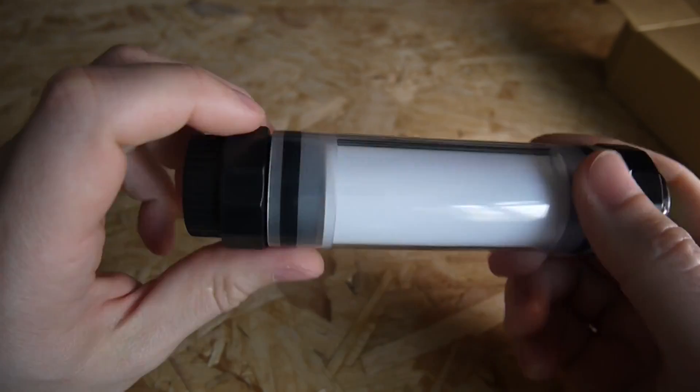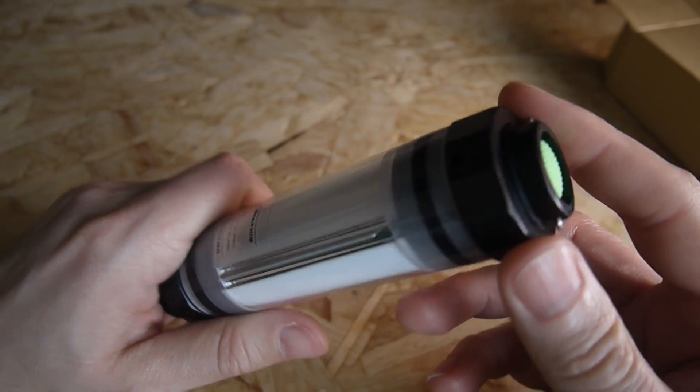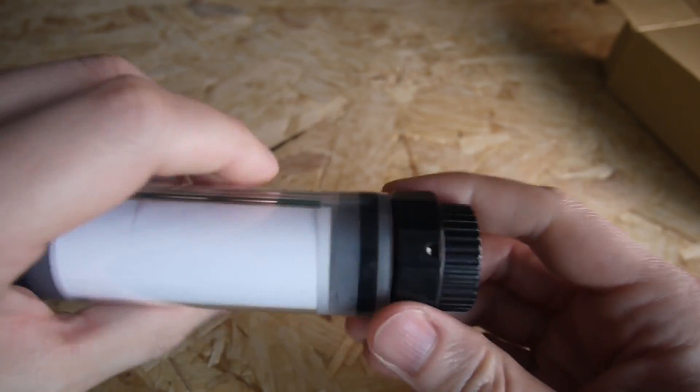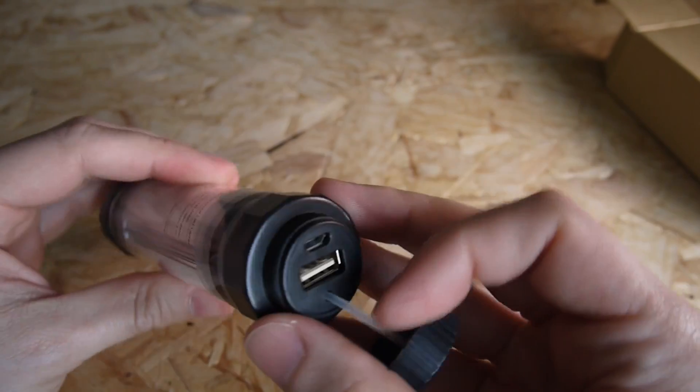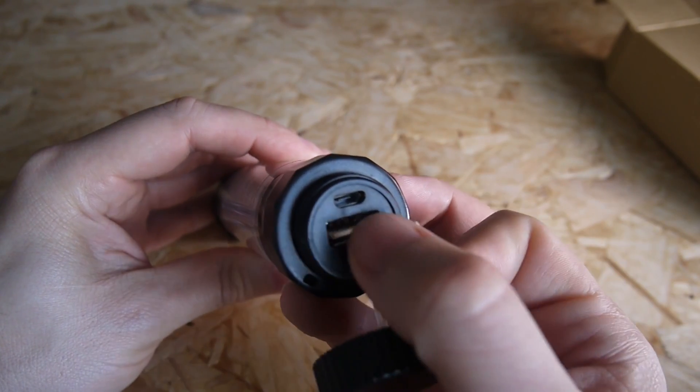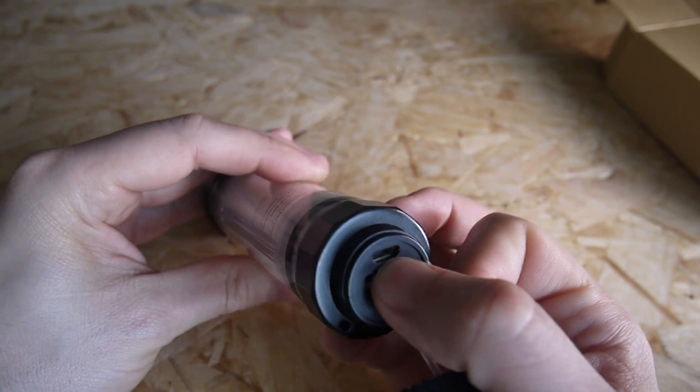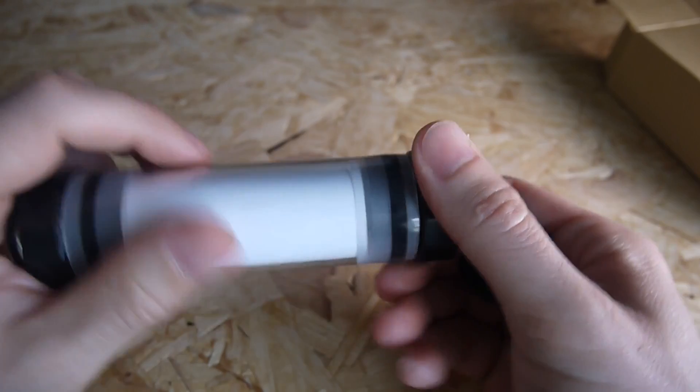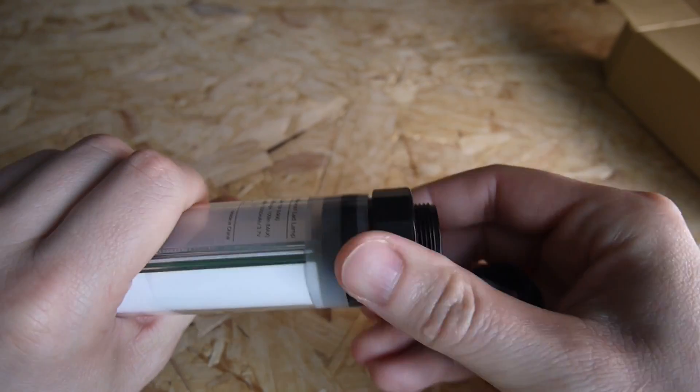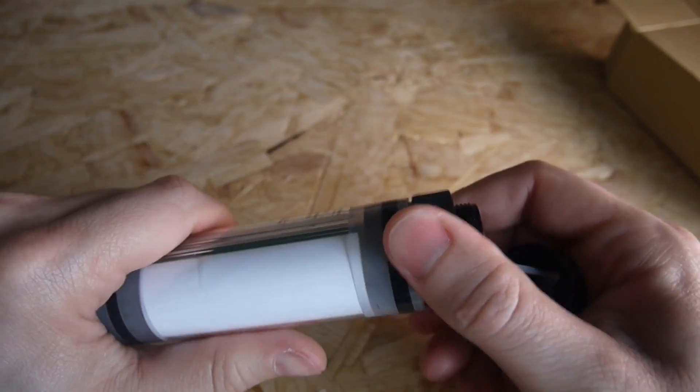And I'm also interested in the actual construction of it. So I've already taken this apart. On the bottom here, you've got the USB output to charge your phone, and then there's the input there to charge the power bank lamp back up. And the way it comes apart, you've got two nuts on here, which you unscrew.